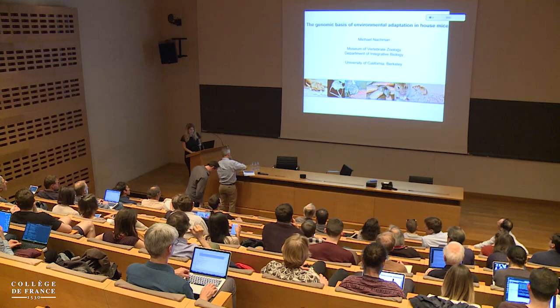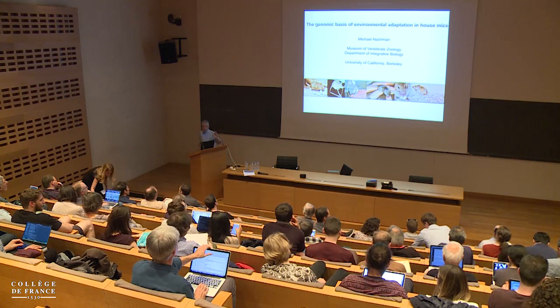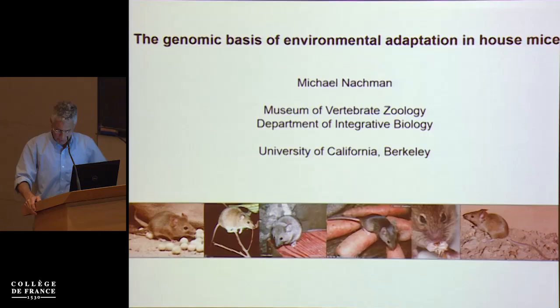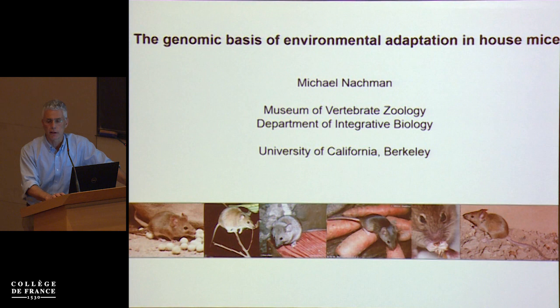Our first speaker of the afternoon session is Michael Nachman from the University of California, Berkeley. With jet lag and a big lunch, my goal is to stay awake through the end of my talk. I want to thank Molly for organizing this meeting — it's been really fun. So we heard this morning about mutation. Today I'm going to talk about what happens after mutation and, once we have variation, what the fate of those mutations is.